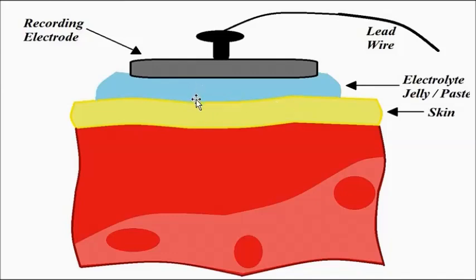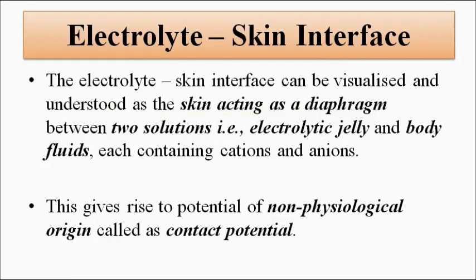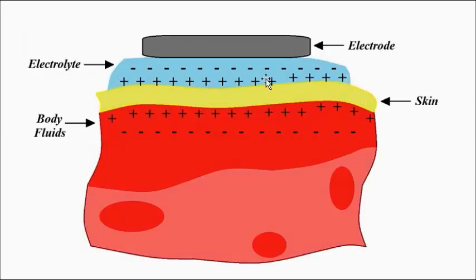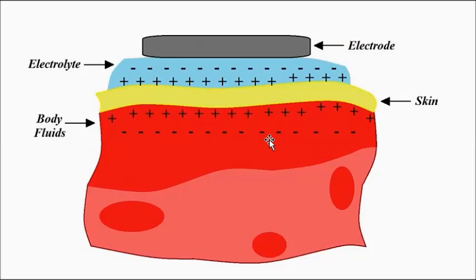We'll now discuss the electrolyte-skin interface. One way to visualize and understand this interface is to think of the skin as a diaphragm — an elastic membrane which is surrounded by ions, both positive and negative ions, cations and anions, on both sides. The electrolyte also contains ions, and the body fluids contain ions. It is because of the ionic movement in the body fluids that the action potential is carried from one point to another. The most common ions present are sodium (Na+), potassium (K+), and chloride (Cl−).